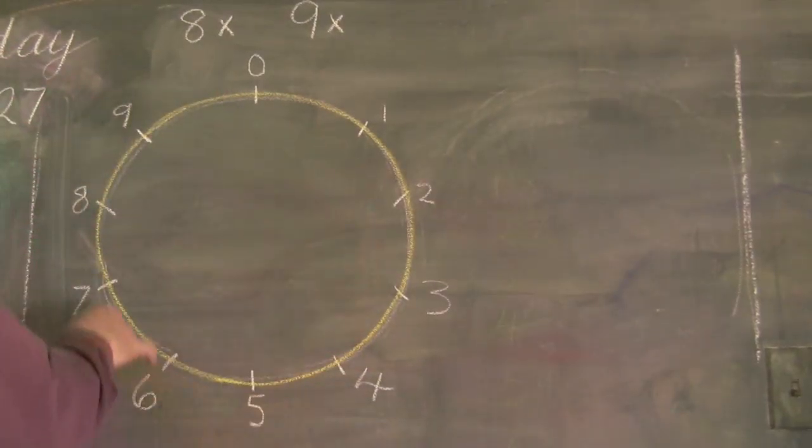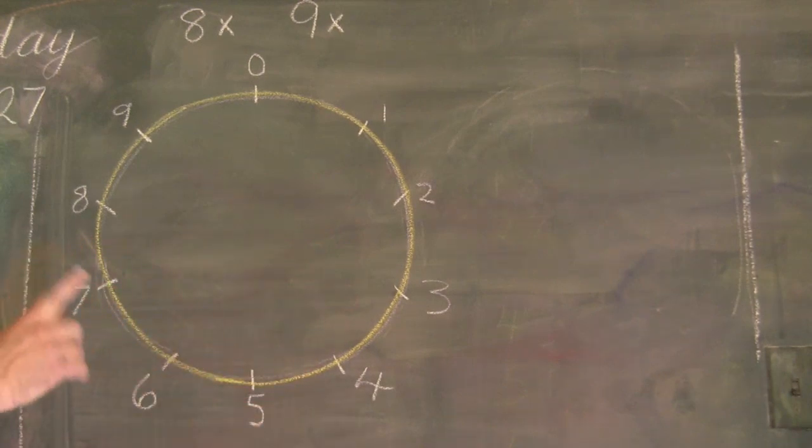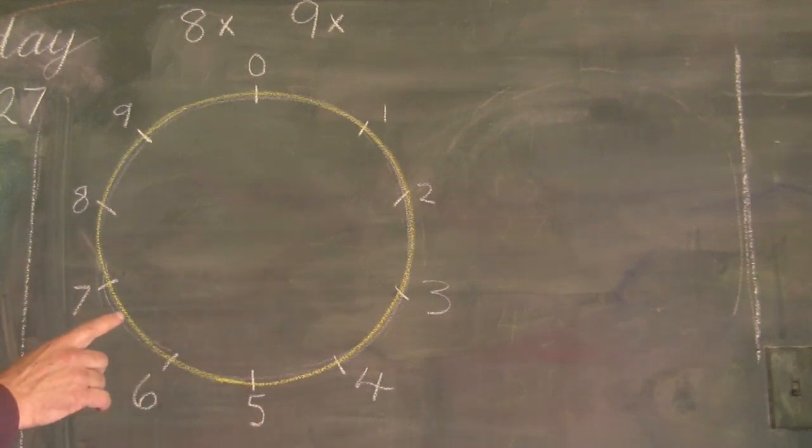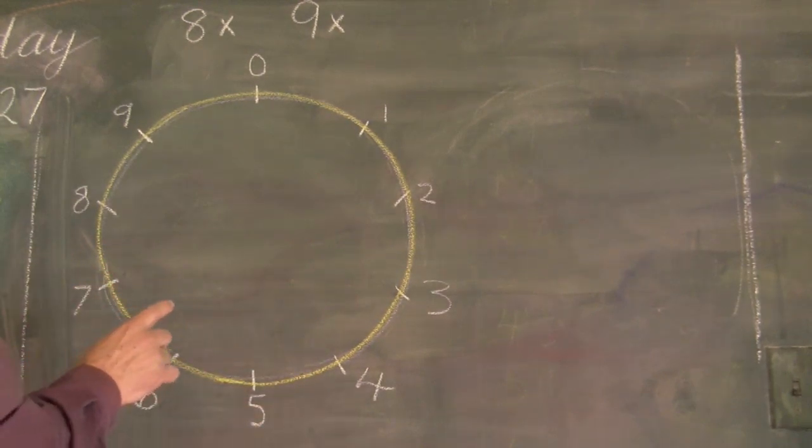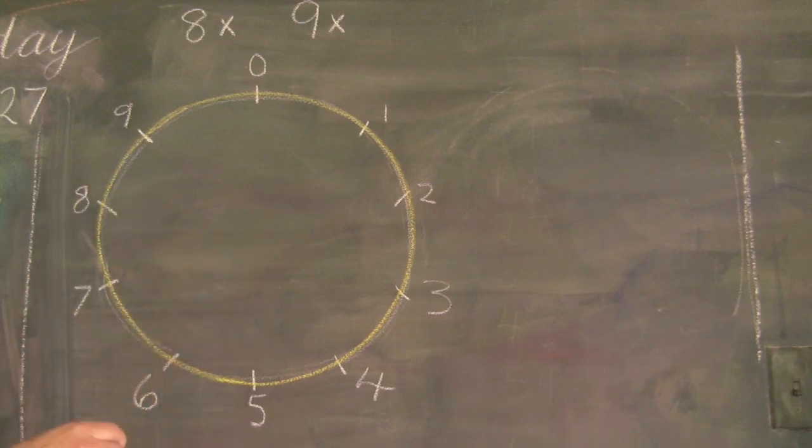With a circle with 10 points on it will tell us how to calculate the times tables for any number. Supposing you want to do times tables for the number 13.